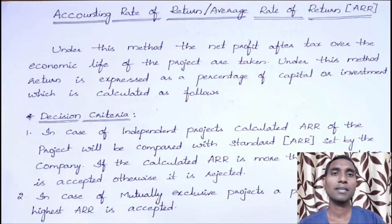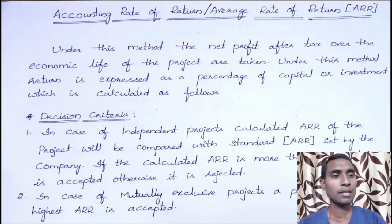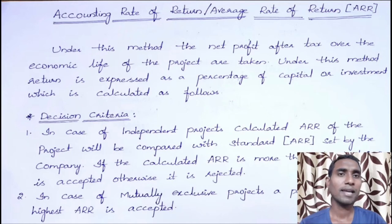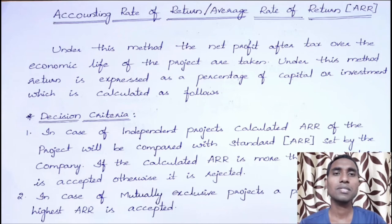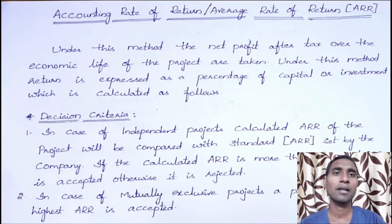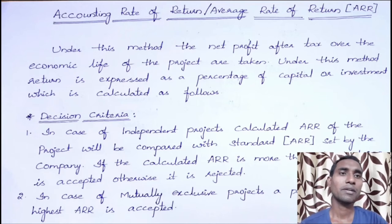People popularly use the short form ARR for this method. This method is categorized under the traditional method. As we discussed, capital budgeting techniques are categorized into two types: traditional and modern. Under traditional, we have payback period and ARR. Payback period is done, and now we are heading to complete ARR under traditional methods.